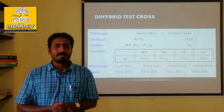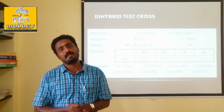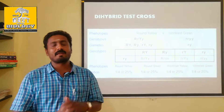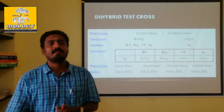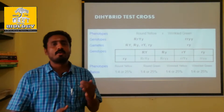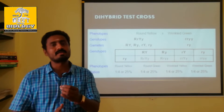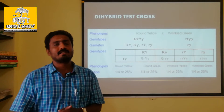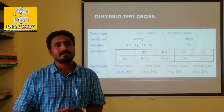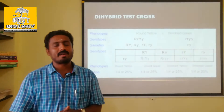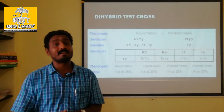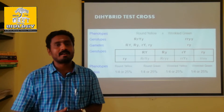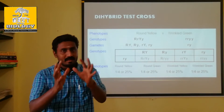How did you do Monohybrid cross? One population is a tall plant. In the tall plant, there is a homozygous tall or heterozygous tall. Checking out with a test is Monohybrid test cross. The ratio is 1 to 1 — it is heterozygous tall, it is homozygous tall.